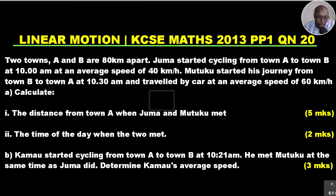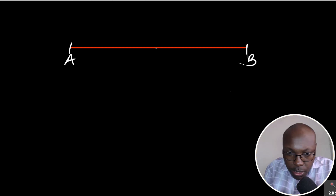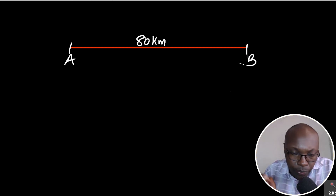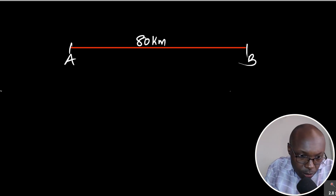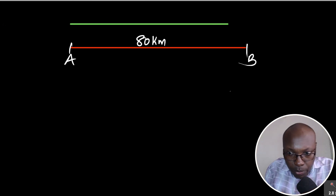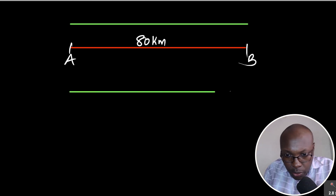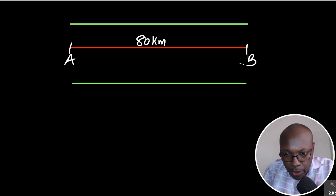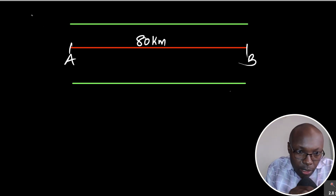We are supposed to calculate the distance from town A when Juma and Mutuko met. Let me draw something here to help us answer this question. The distance between towns A and B is 80 kilometers. Juma is traveling from A to B, and Mutuko is traveling from B to A.